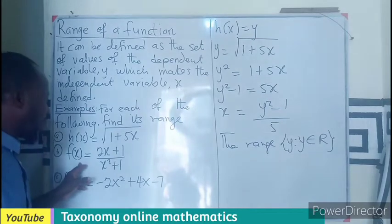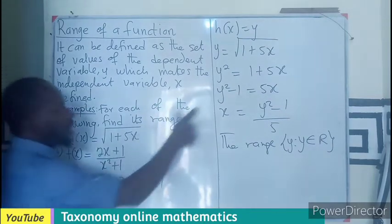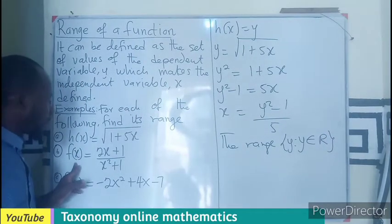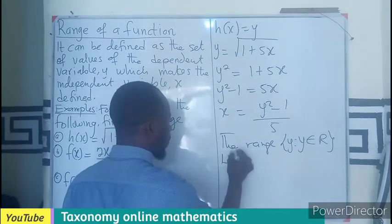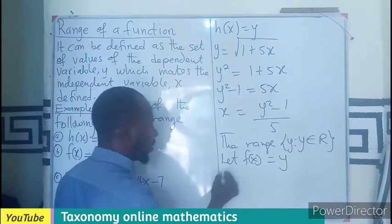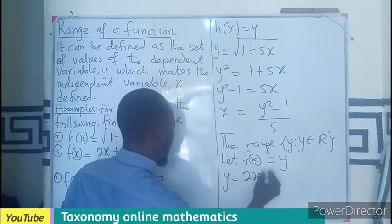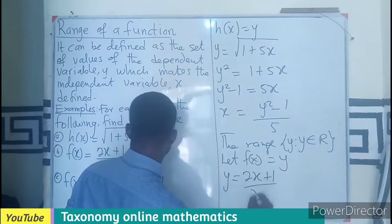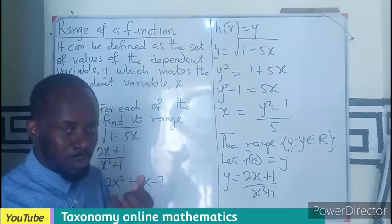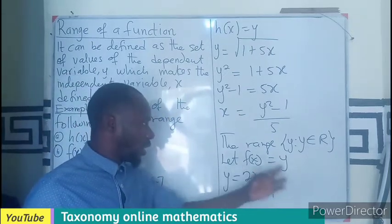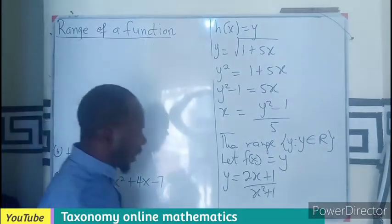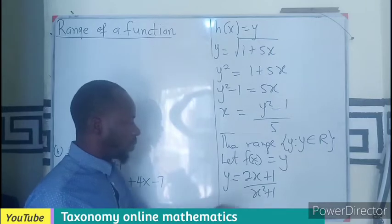For the second example, f(x) is also going to be replaced by y because y is the dependent variable. So we let f(x) equal y, which implies y equals (2x + 1) / (x² + 1). First thing — what do we do? We make x the subject. In order to make x the subject we need to cross-multiply.